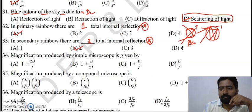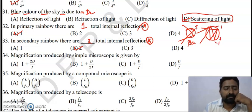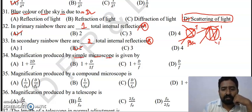Magnification produced by a simple microscope: there is only one lens, and the formula is 1 + D divided by f, where f is the focal length of the lens.